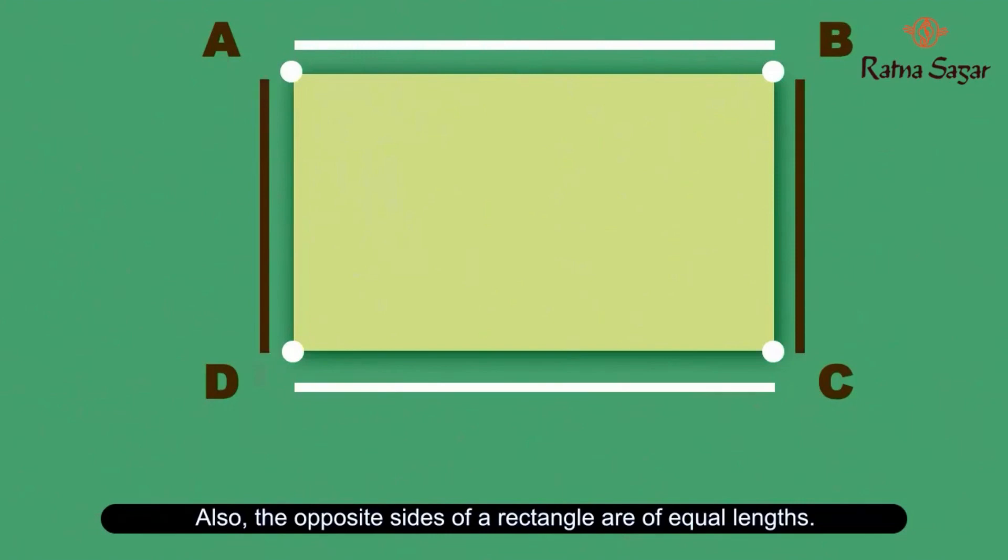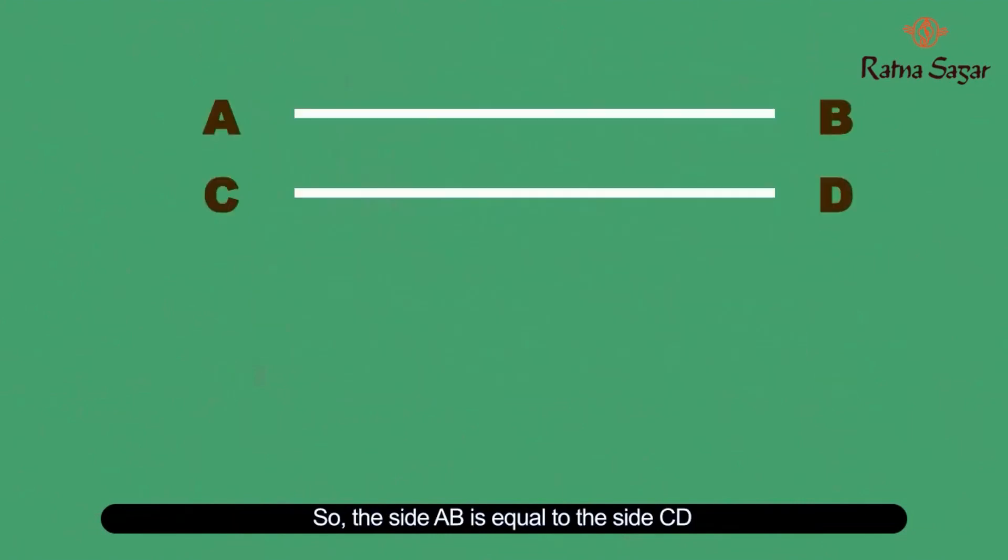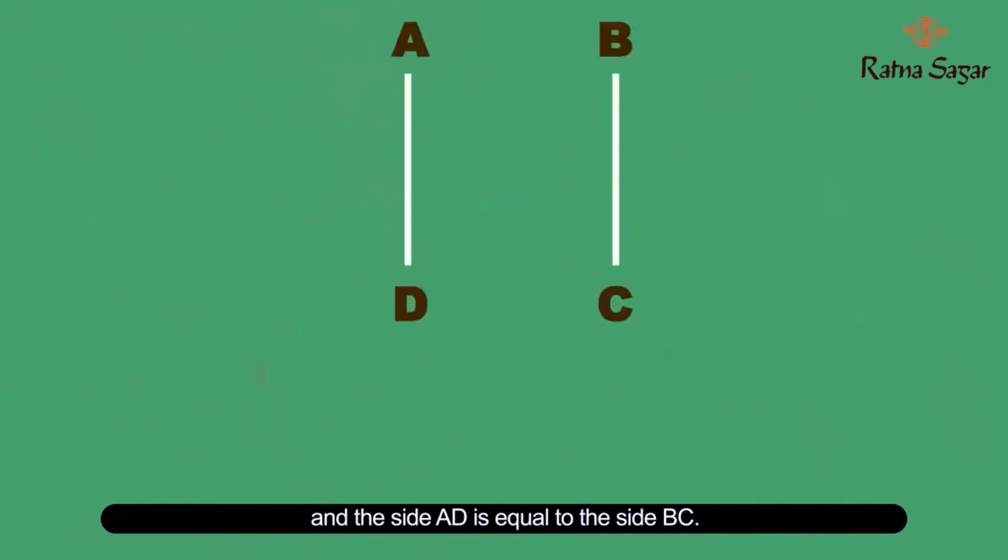Also, the opposite sides of a rectangle are of equal length. So, the side AB is equal to the side CD, and the side AD is equal to the side BC.